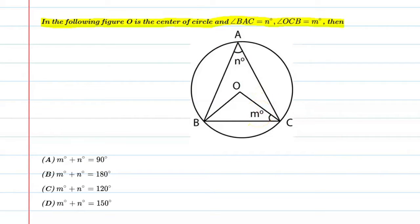Let me write the given values. Angle BAC is equal to n degrees, and angle OCB is equal to m degrees. So let's start our question.